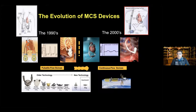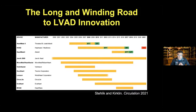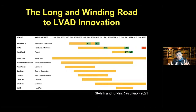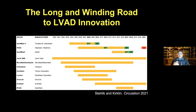Shown here are two devices that have now reached obsolescence. The HVAD device stopped commercialization on June 3rd of this year. The HeartMate 2 has largely been replaced by the upgraded HeartMate 3 pump. The road to innovation in left ventricular assist devices is long and winding. Many devices are produced and engineered, but very few actually reach the stage of approval and commercialization — and then many reach the point of obsolescence.